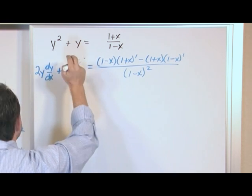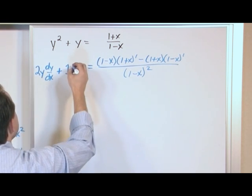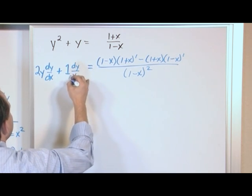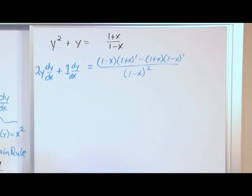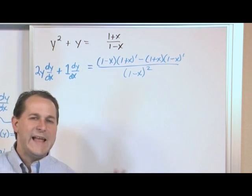The second term, the derivative of this is just simply 1. But again, you have to multiply by dy dx because you don't know how y varies with respect to x.